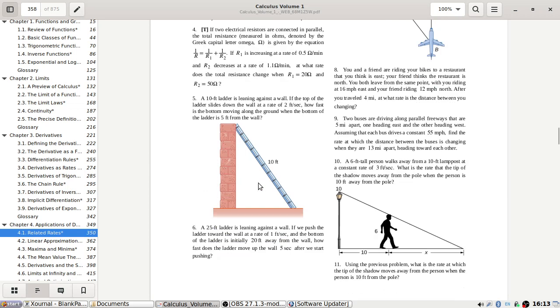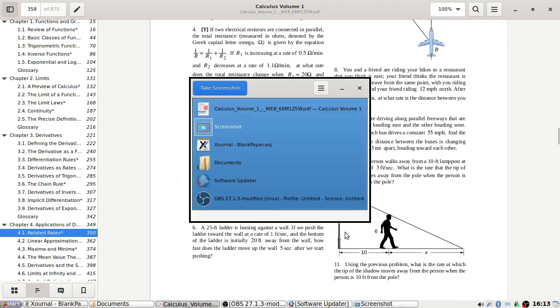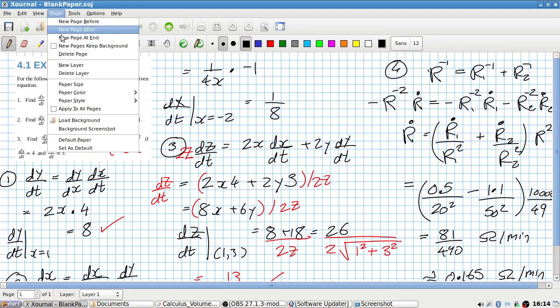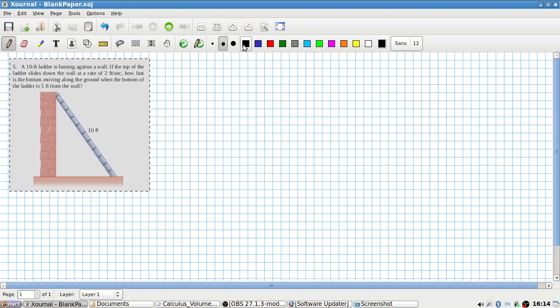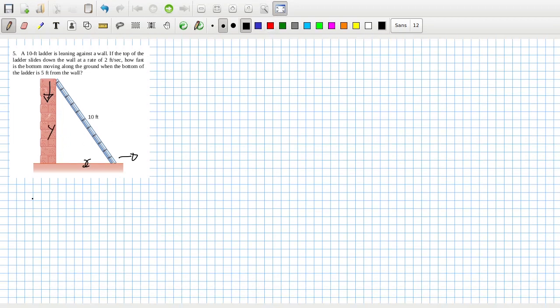Five is a classic question. A 10-foot ladder is leaning against a wall. If the top of the ladder slides down the wall at 2 feet per second, how fast does the bottom move from the ground when the bottom is 5 feet from the wall? So if we call this x and y, we have x² + y² = 10², which is 100. If we differentiate here, we have 2x(dx/dt) + 2y(dy/dt) = 0.